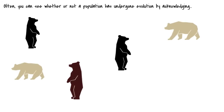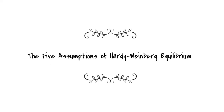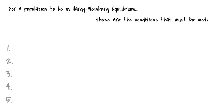Often, you can see whether or not a population has undergone evolution by acknowledging the five assumptions of Hardy-Weinberg Equilibrium. For a population to be in Hardy-Weinberg Equilibrium, these are the conditions that must be met.